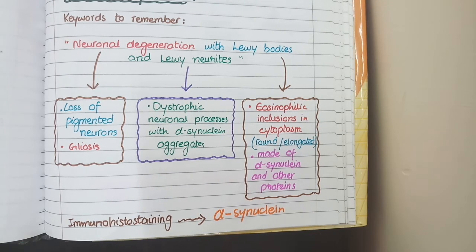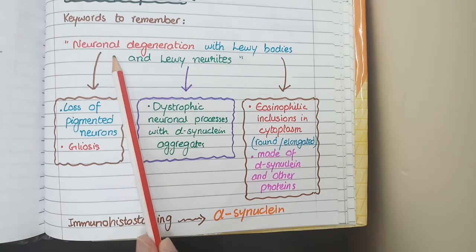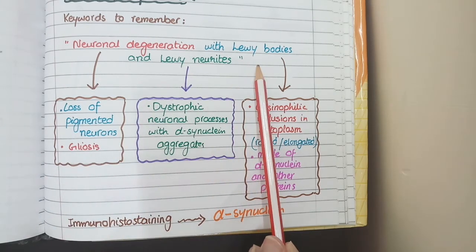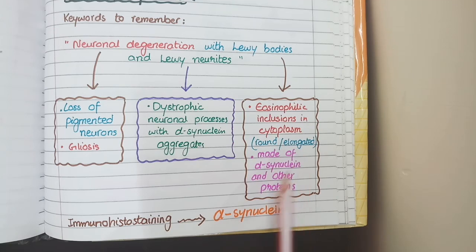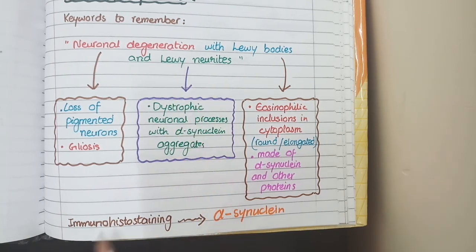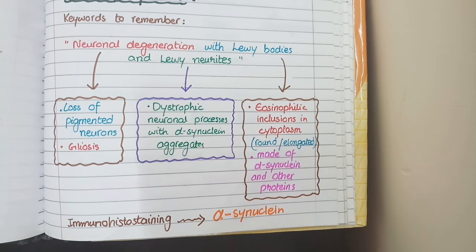Let's revise some morphological features once again. In Parkinson's disease there is neuronal degeneration characterized by loss of pigmented neurons and gliosis. Lewy bodies are eosinophilic inclusions in the cytoplasm — they may be round or elongated and are made of alpha-synuclein protein. Lewy neurites are dystrophic neuronal processes with alpha-synuclein aggregates. This concludes the pathological features of Parkinson's disease.